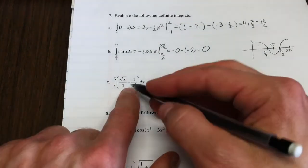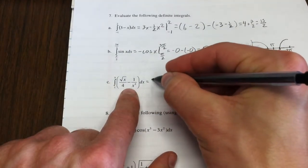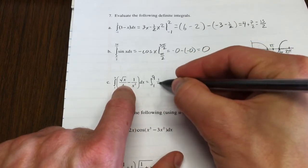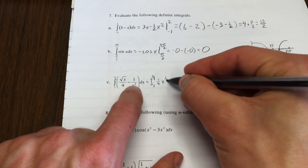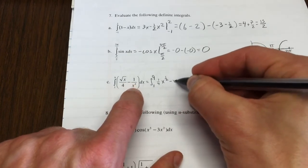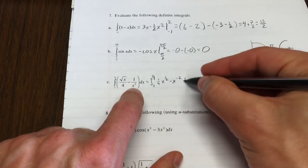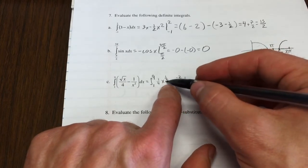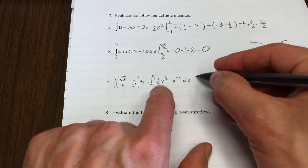Down here, first thing I'm going to do is a little bit of algebraic simplification to try and make my life more pleasant. This I'll think of as one-fourth x to the one-half. This I'll think of as x to the negative 2. Since the only power I can't use the power rule for is x to the negative 1, I'll go ahead and use the power rule here.